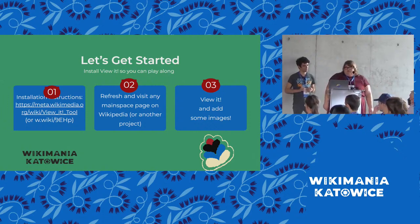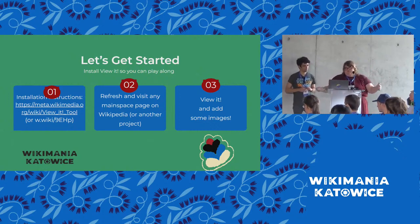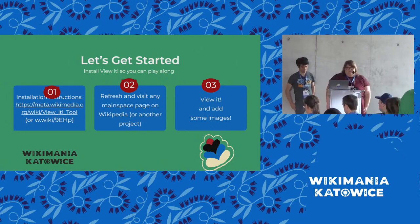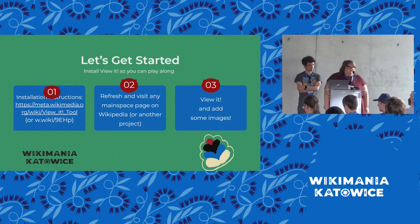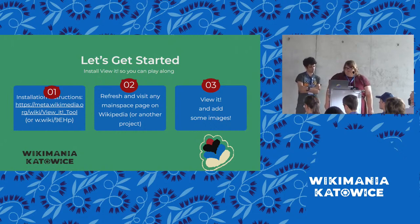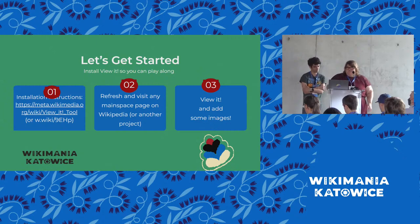ViewIt works across all Wikipedia projects — Wikidata, Wikivoyage, Wikisource, Wikispecies, Wikipedia itself in every language. In most languages it will be in English, but there are some that have localized, and we'll get more into the nitty-gritty of how many later in our presentation. And then you can view it and add some images, and we'll talk more about functionality as we go.